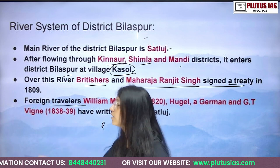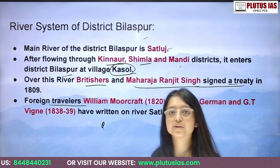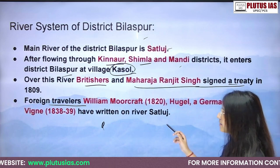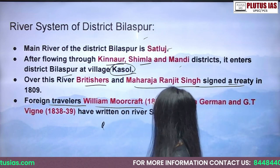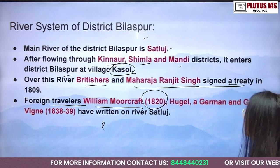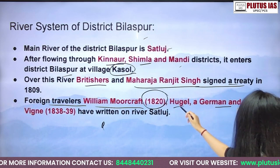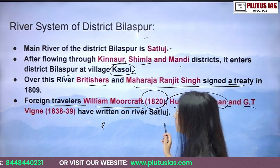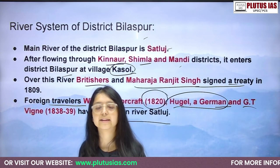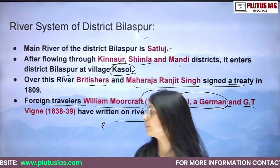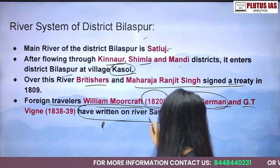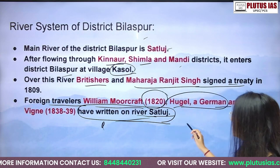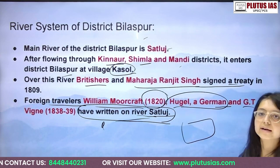Many foreign travelers expeditioned through these districts. William Moorcraft visited in 1820. Hugel was German. G.T. Vigne also traveled here around 1820. These travelers mentioned the rivers in their journals while traveling through the region.